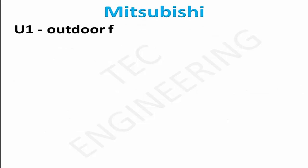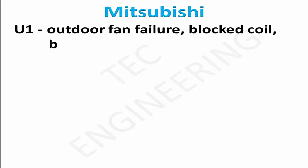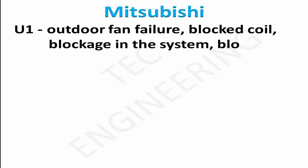U1: outdoor fan failure — blocked coil or blockage in the system. Also check for blocked filters on indoor unit in heating mode. U2: outdoor unit fault.